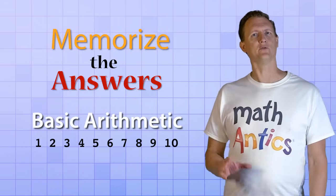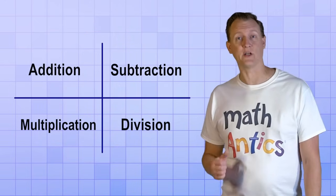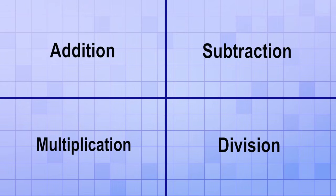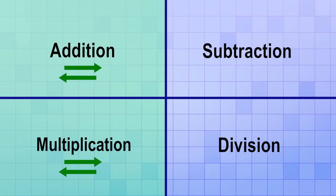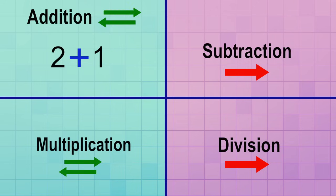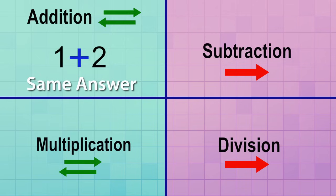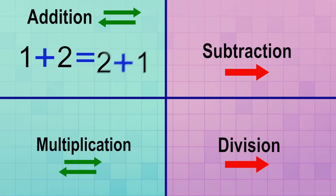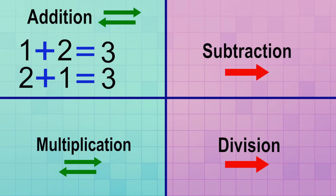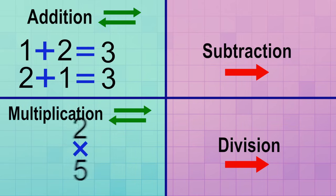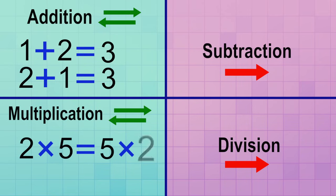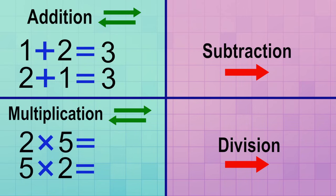But first, I want to tell you two more important things about these arithmetic operations. The first thing you need to know is that for two of these operations, the order of the numbers doesn't matter. But for the other two operations, it does matter. With addition, you can switch the order of the numbers you're adding and you'll still get the same answer. 1 plus 2 is equal to 2 plus 1. No matter which number comes first, the answer will still be 3. And it's the same with multiplication — you can switch the order and still get the same answer. 2 times 5 is the same as 5 times 2. In both cases, the answer will be 10.